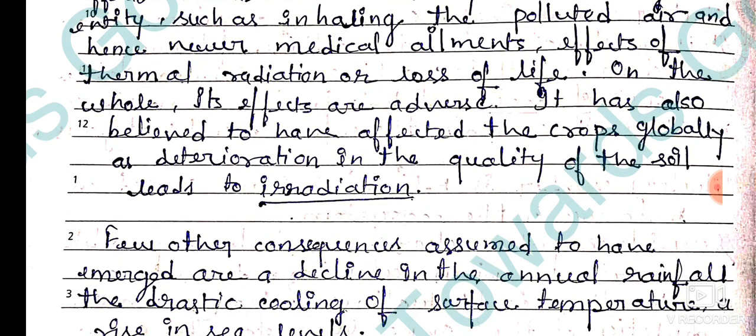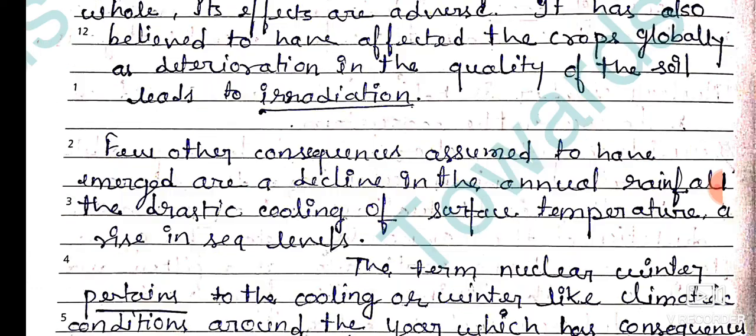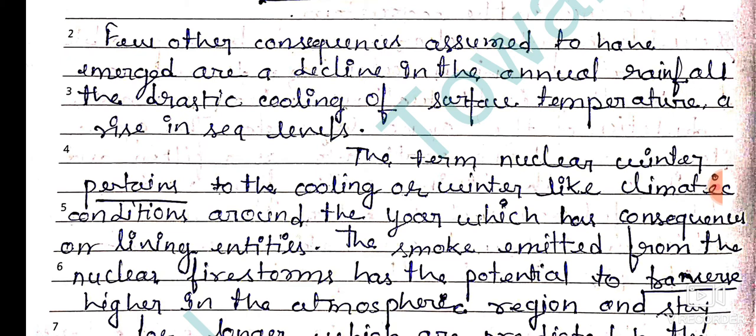Nuclear winter is also believed to have affected crops globally, and deterioration in the quality of soil leads to irradiation. A few other consequences include a decline in annual rainfall and a drastic cooling of surface temperature, as well as a rise in sea level.